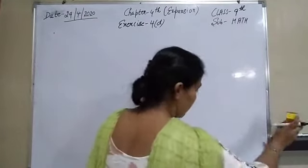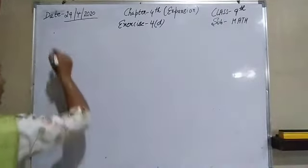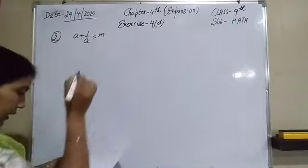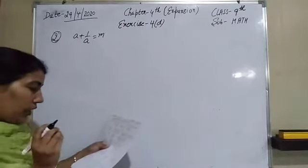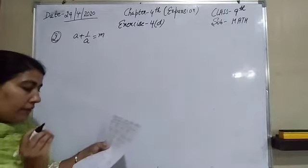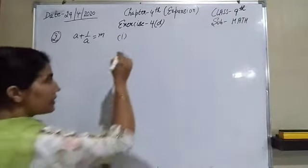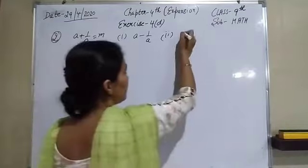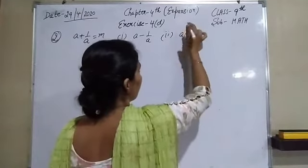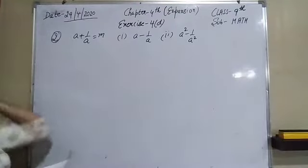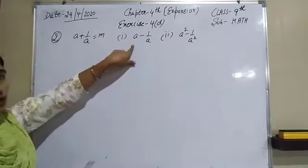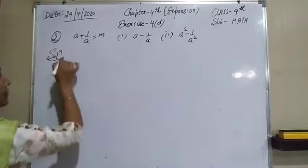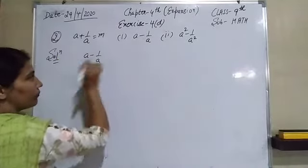For the second portion of this worksheet, we are given a + 1/a = m. We have to find, in terms of m, firstly the value of a − 1/a, and secondly the value of a² − 1/a². We have given a + 1/a = m and we need to find both these values.